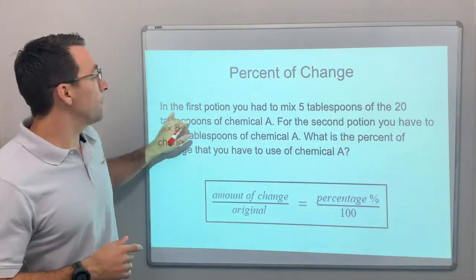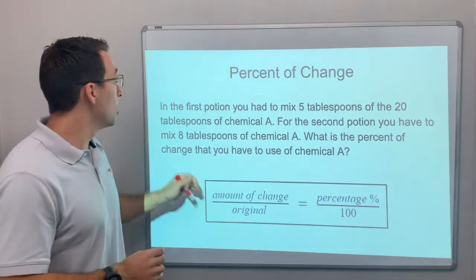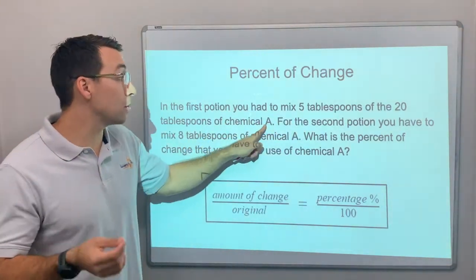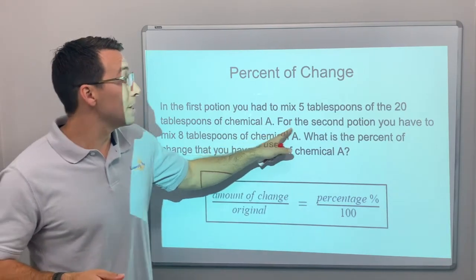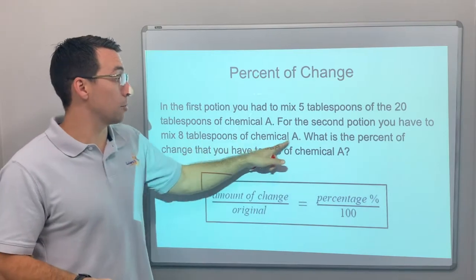In the first potion you had to mix 5 tablespoons of the 20 tablespoons of chemical A. For the second potion you have to mix 8 tablespoons of chemical A.